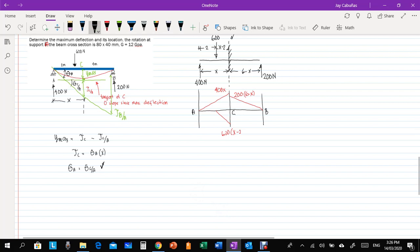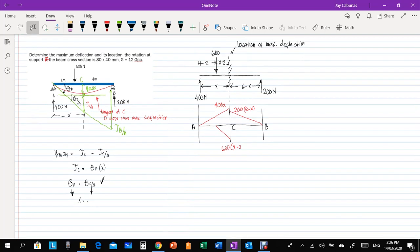By computing or determining the equation of theta A, and then the equation of theta CA we can get X. So, theta CA, we can get that. So, first, we need to do moment by parts. Again, for moment by parts, we need to find where the cantilever is. Again, you can place the cantilever or fixed support anywhere, but in this case, I'll place it at the maximum. So, this at the location of the maximum deflection I'll place it, which is X distance from 400 and 6 minus X distance from 200. Since 200 is 6 meters, so this X, therefore this is 6 minus X.